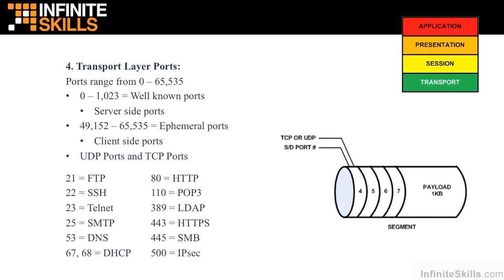The well-known ports range from 0 to 1023 and are typically bound to server-side services that a client may request. For example, if a client opens a browser and wants to browse a web page, he'll send the request to destination port 80. When the server receives the segment, it looks at the port number in the layer 4 header and hands the request to the web server. The client also selects a port number from the ephemeral port range — ranging from 49,152 through 65,535 — as its source port, for example port 58,000.